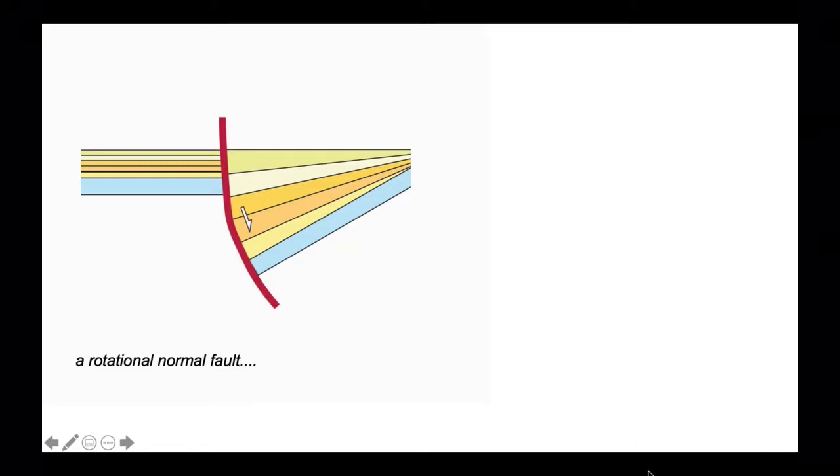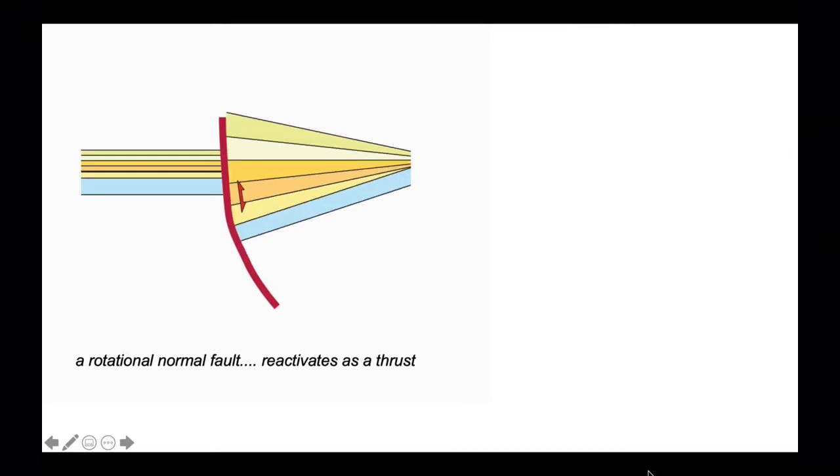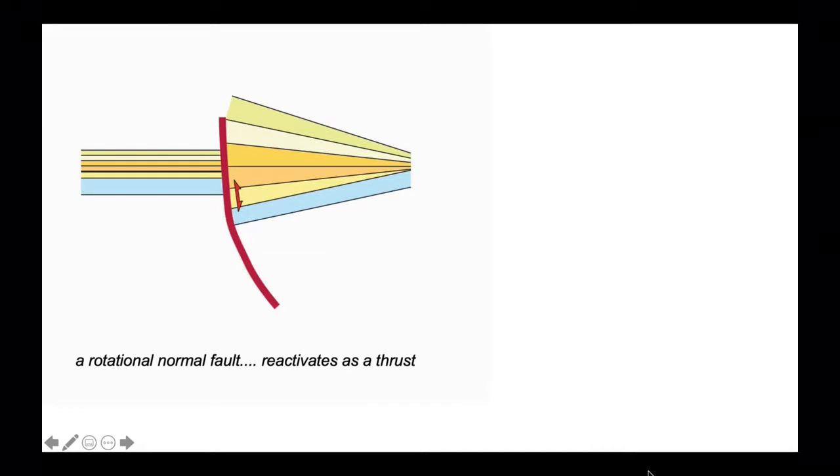Let's see how this might work in a simple cartoon. Here's a rotational normal fault down-throwing to the right, with the stratigraphic sections in the hanging wall expanding towards the fault. Let's reactivate this gradually as a thrust. So the hanging wall now will move up. And a bit more.